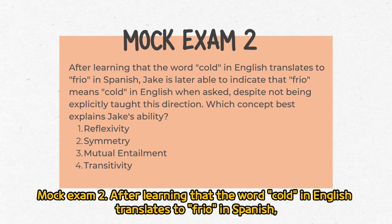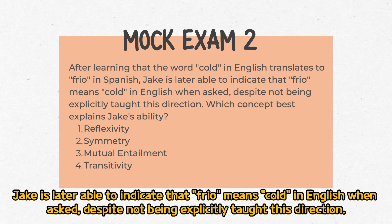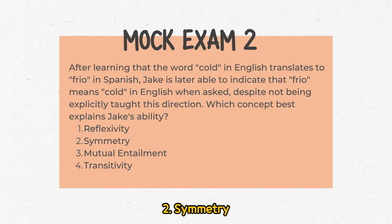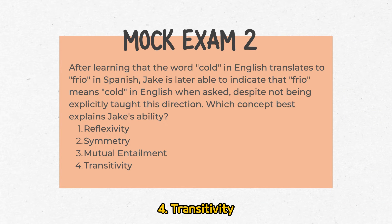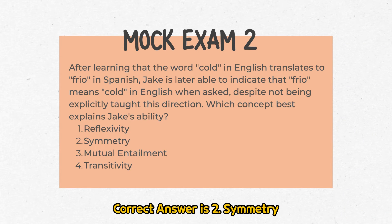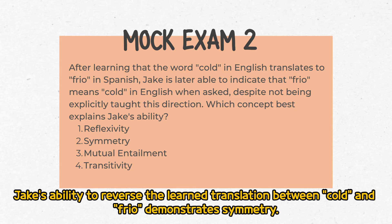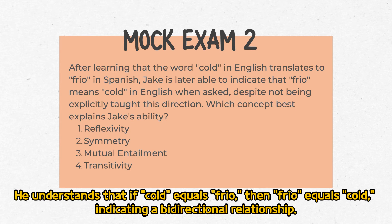Mock Exam 2: After learning that the word 'cold' in English translates to 'frío' in Spanish, Jake is later able to indicate that 'frío' means 'cold' in English when asked, despite not being explicitly taught this direction. Which concept best explains Jake's ability? 1. Reflexivity, 2. Symmetry, 3. Mutual entailment, 4. Transitivity. The correct answer is 2: Symmetry. Jake's ability to reverse the learned translation between 'cold' and 'frío' demonstrates symmetry. He understands that if cold equals frío, then frío equals cold, indicating a bidirectional relationship.